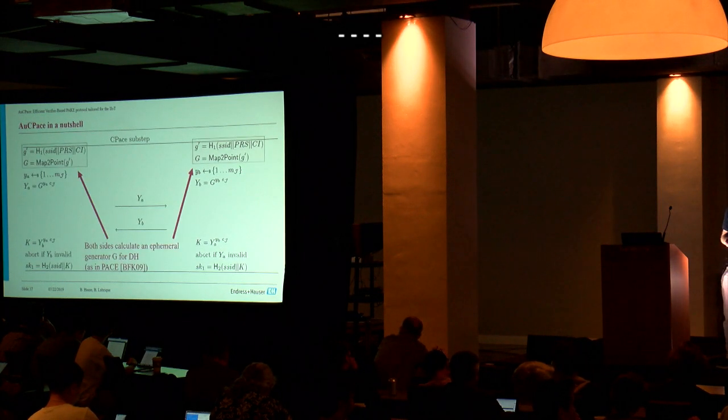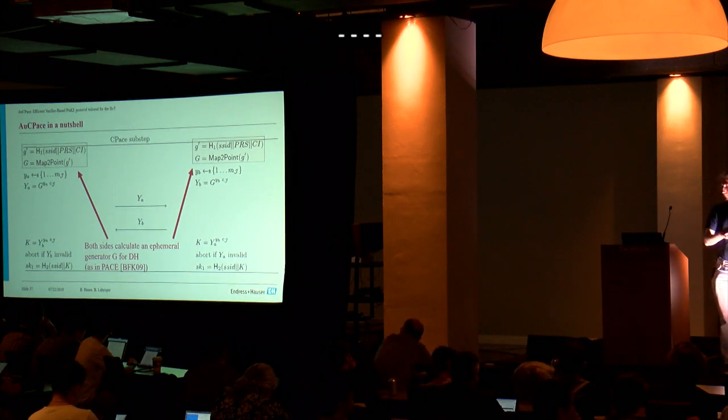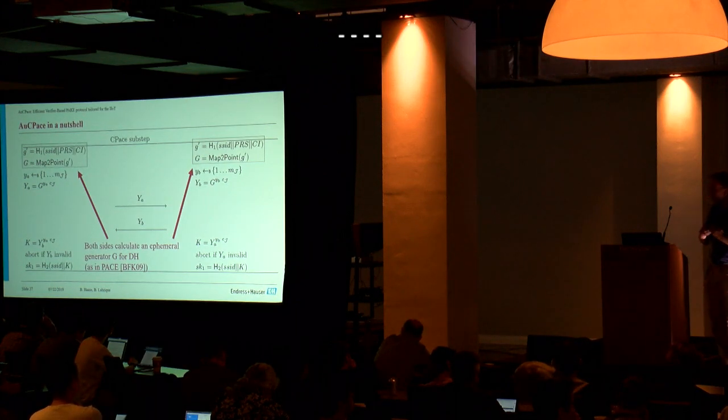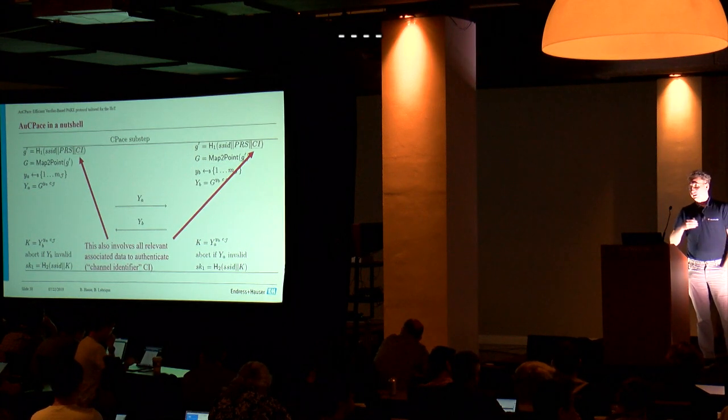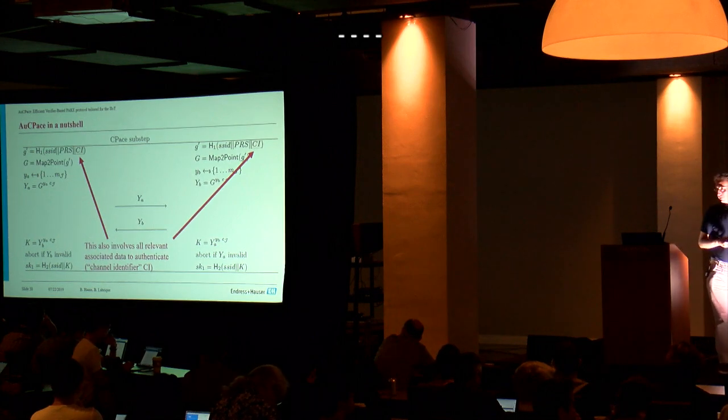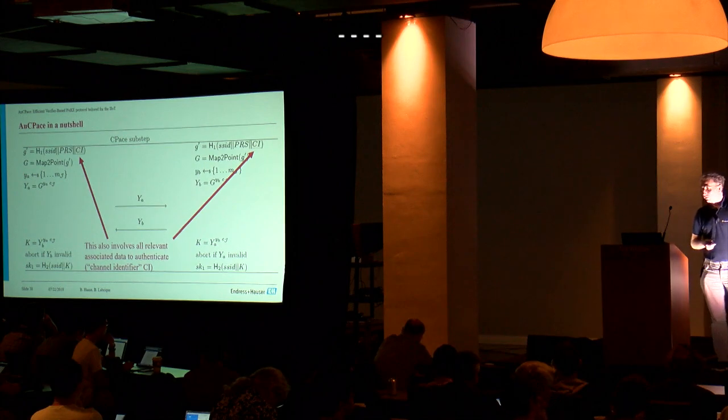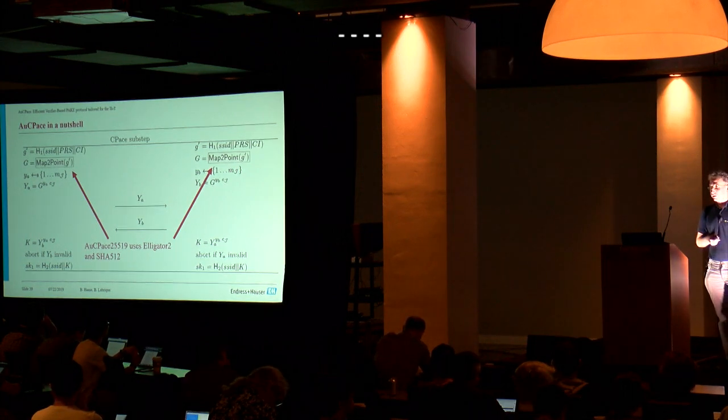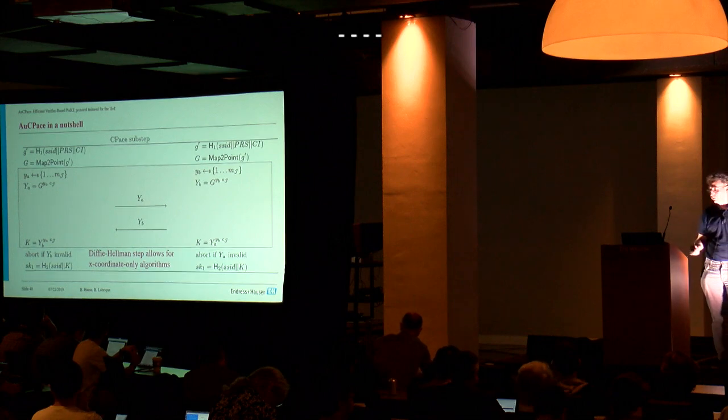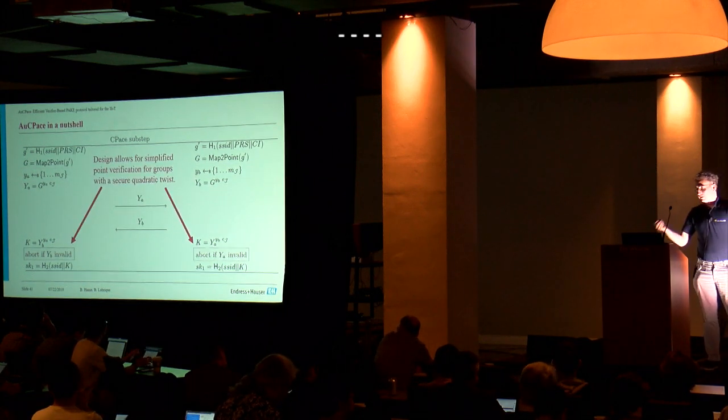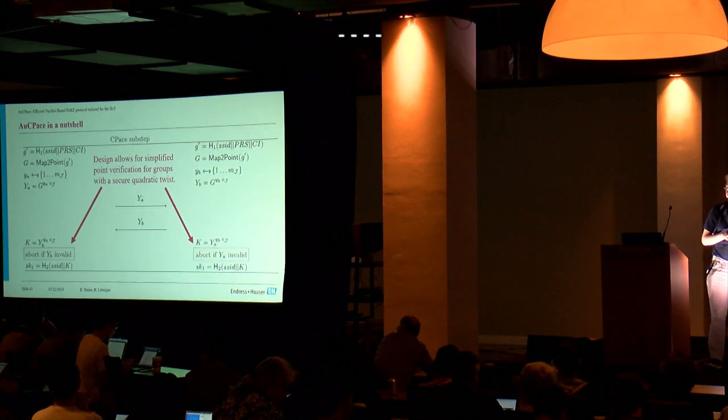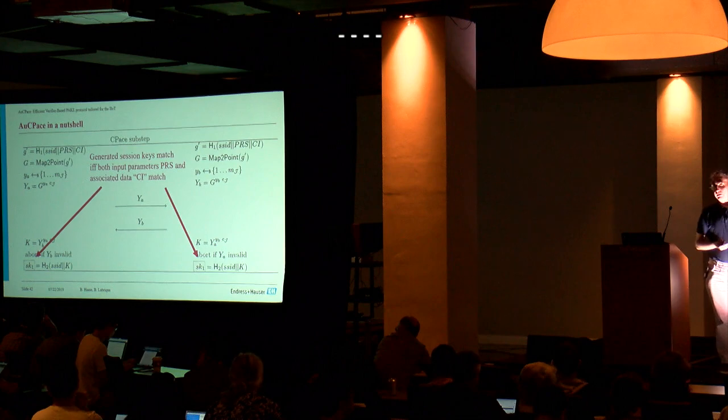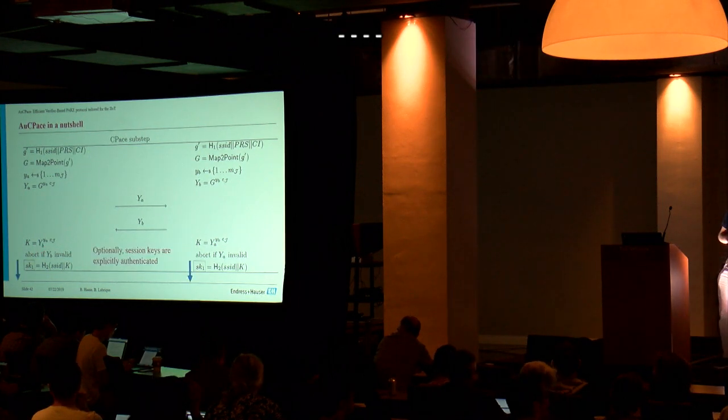So PRS is a component which we mustn't leak to an adversary because this information would allow for an offline dictionary search. This information is passed over to a balanced PAKE protocol, the C-PACHE, the green part here. And there it is used for generating an ephemeral generator for the elliptic curve group. So this is a feature which is very similar to the PACE protocol, which is used in travel documents. We integrate also already associated data that we would like to authenticate in a channel identifier field for the generator.